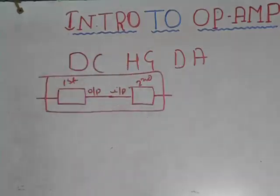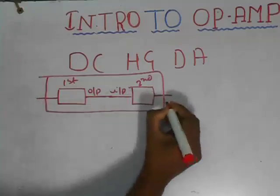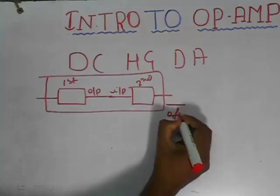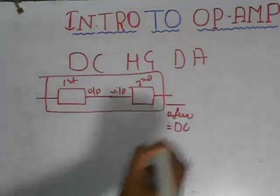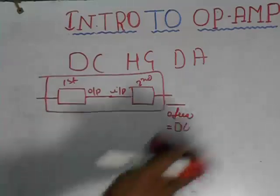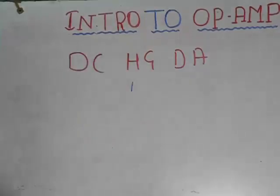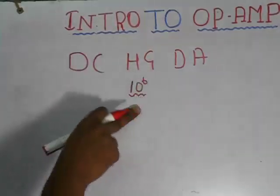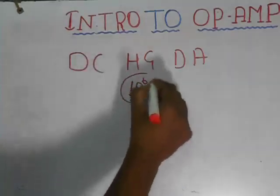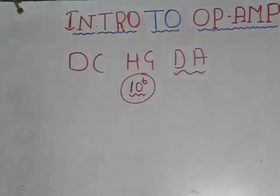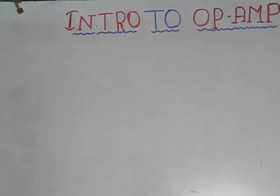Don't worry — we will explain this very clearly in future videos. The use of direct coupling is that it permits only signals having zero frequency, which are DC signals. Regarding high gain: as I said earlier, the practical open-loop gain of this op-amp is almost 10^6, which is very high. Now, why is it called a differential amplifier? Let us see the schematic diagram of the op-amp.